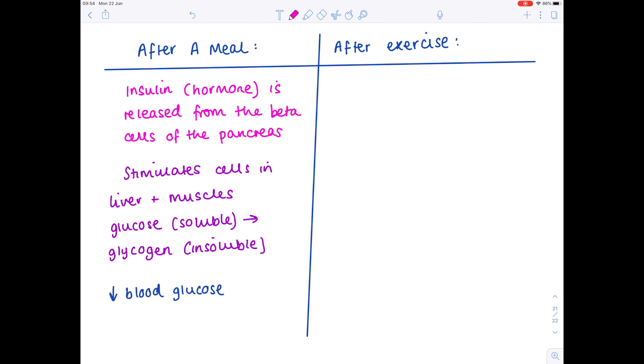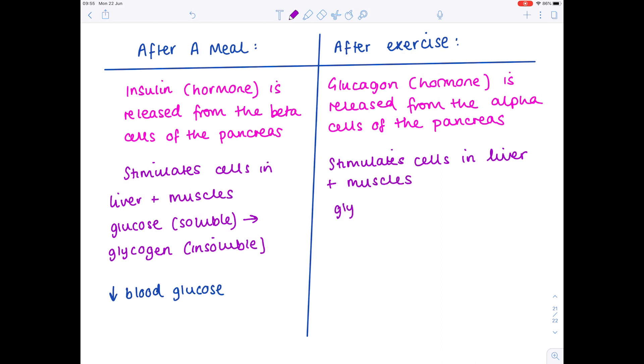Now after a period of rest or exercise for example if you've been asleep all night you obviously haven't eaten so this time a second hormone is released. Notice it's spelling glucagon. That again is released from the pancreas but instead of being released from the beta cells it's released from alpha cells. Glucagon does the opposite of insulin so it stimulates cells in the liver and muscles to convert insoluble glycogen into soluble glucose and as a result blood glucose levels increase.